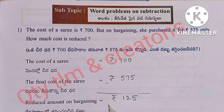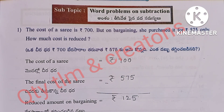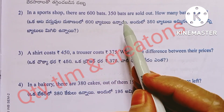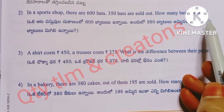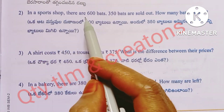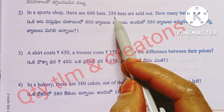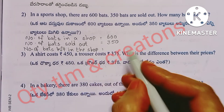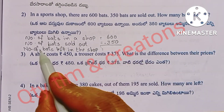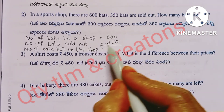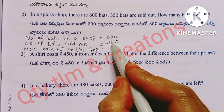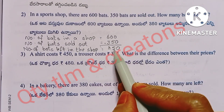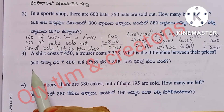Next question: In a sports shop there are 600 bars; 350 bars are sold out. How many bars are left? Number of bars in the shop: 600. Number of bars sold out: 350. We subtract 350 from 600 and get 250. So 250 bars are left in the shop.